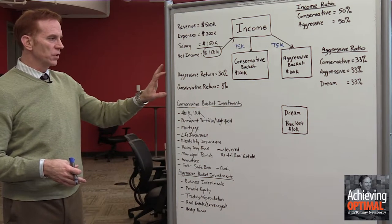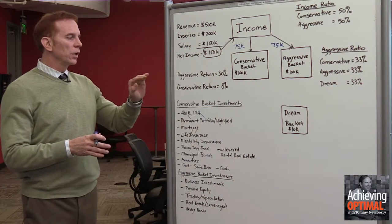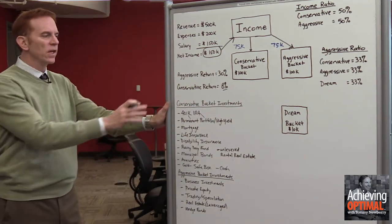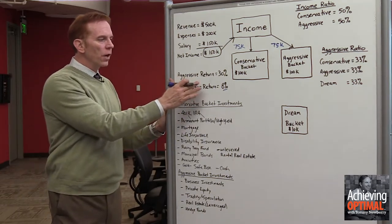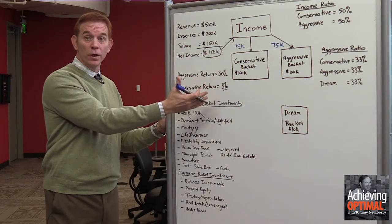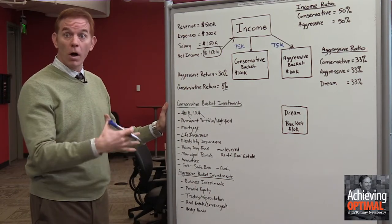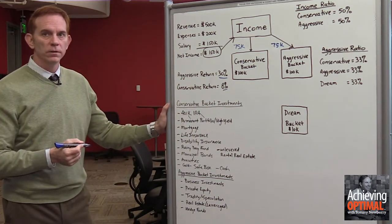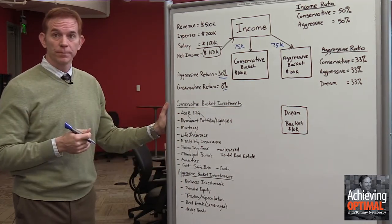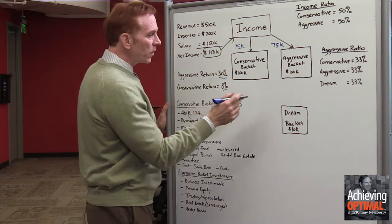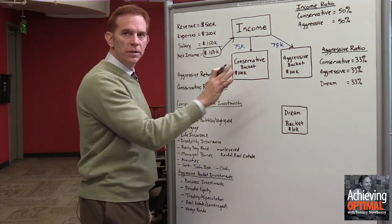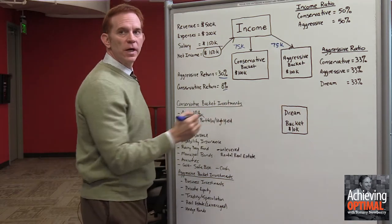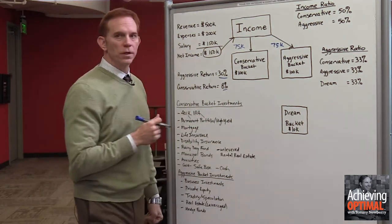We're going to make some return assumptions. In the conservative bucket, we're targeting 6–12% returns, so we'll say we get 8% for this given year. In our aggressive bucket, we're going for big returns — of course the trade-off is we can lose money, we can lose all of it. In this case, we're going to assume our aggressive return is 30%, which is definitely possible with these types of investments. To begin with, we have $100,000 in our conservative bucket, $100,000 in our aggressive bucket, and $10,000 in our dream bucket.